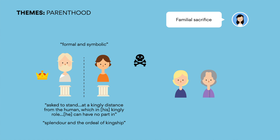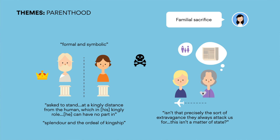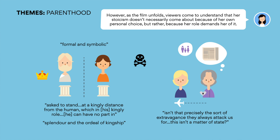While Priam's overt expressiveness in his limitations as a father may sway empathy from Ransom readers, Queen Elizabeth's stoicism at first makes her appear cold-hearted and unfeeling. Her reaction to Prince Charles' desire to fly a private jet to see Diana in hospital is one more concerned with the media's reaction rather than of familial care and concern: 'Isn't that precisely the sort of extravagance they always attack us for? This isn't a matter of state.' However, as the film unfolds, viewers come to understand that her stoicism doesn't necessarily come about because of her own personal choice, but rather because her role demands it.